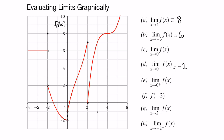Now let's look at what happens as x approaches 0 from the right — the plus sign means from the right. It's this function that's defined for values between 0 and 2. We follow the curve, get closer and closer to 0, and we can see that the limit is approaching negative 1. So the limit as x approaches 0 from the right is negative 1. Since our left and right-hand limits don't give us the same value, the limit as x approaches 0 does not exist.